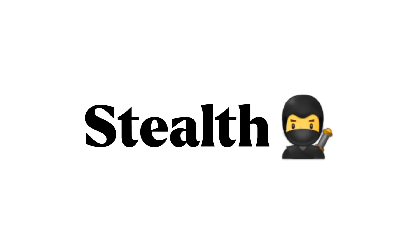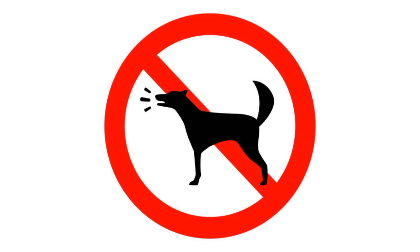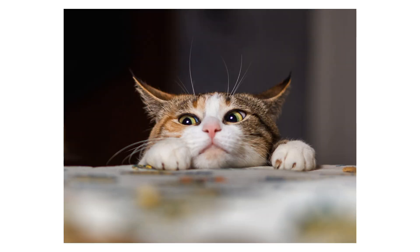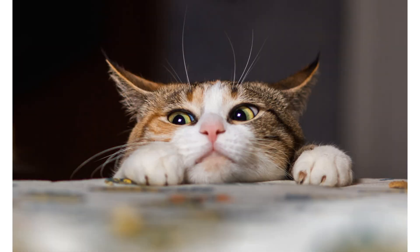Felines are built for stealth. They don't run around barking for attention. They observe, stalk, and then boom — the job's done.